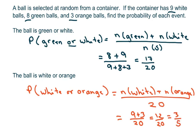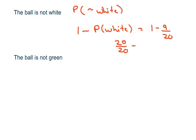We have two more with the probability that it's not white. So probability that it's not white, that's 1 minus the probability of white, which equals 1 minus 9 over 20, which equals 20 over 20 minus 9 over 20, which equals 11 over 20.